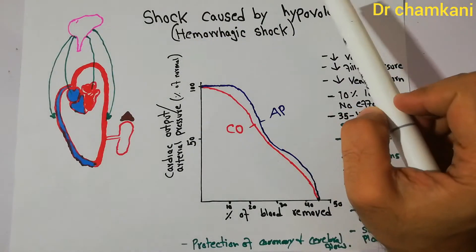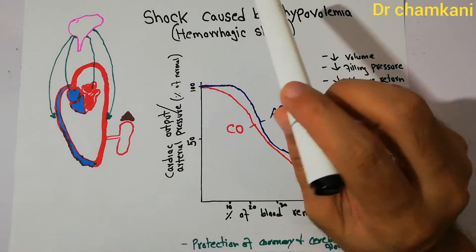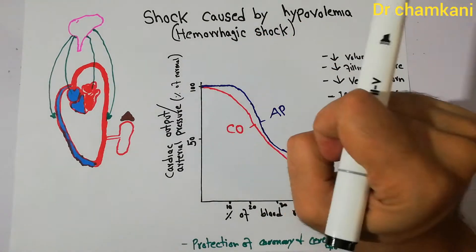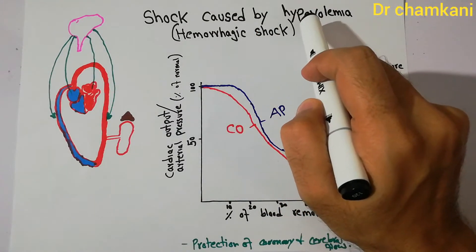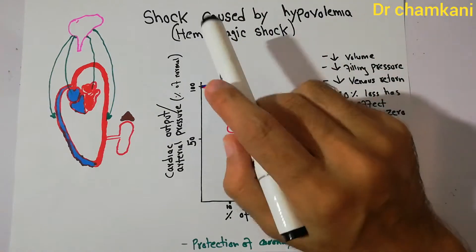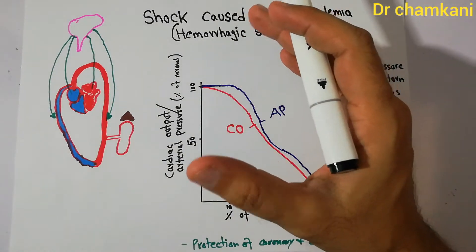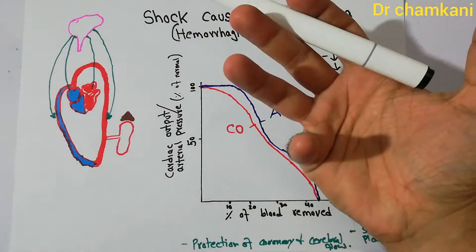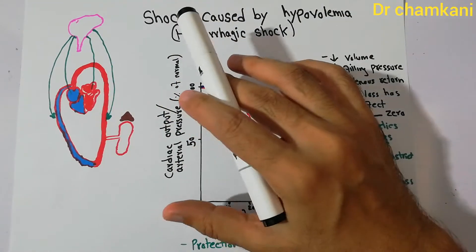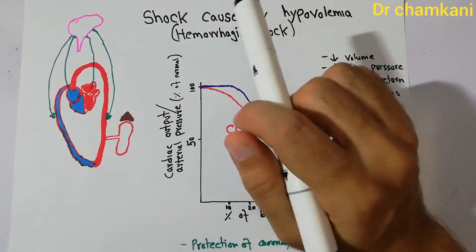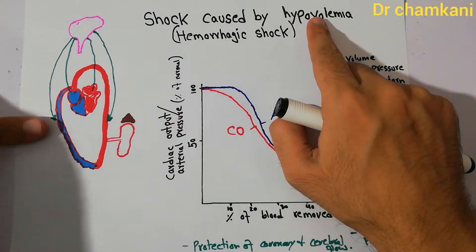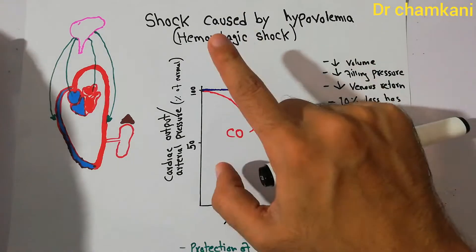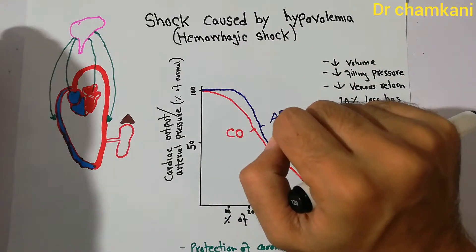Today we are going to talk about the shock caused by hypovolemia, and especially the hypovolemic shock caused by hemorrhagic shock in which blood loss occurs. Hypovolemic shock can occur due to fluid loss — either due to loss of blood, loss of water, or loss of plasma. Any condition which leads to a decreased amount of fluid in the circulatory system can lead to hypovolemic shock. But today we are specifically considering hypovolemic shock caused by hemorrhagic shock, or bleeding.